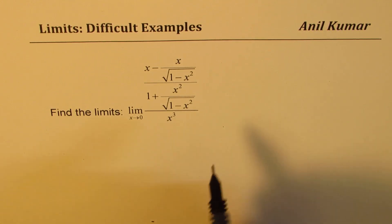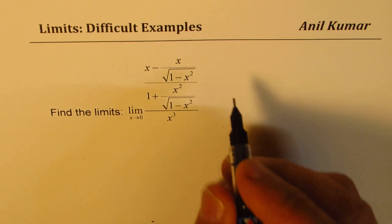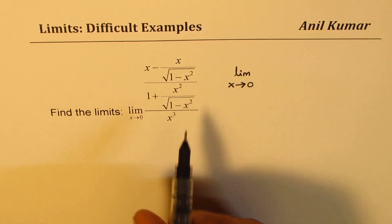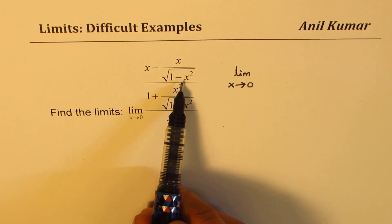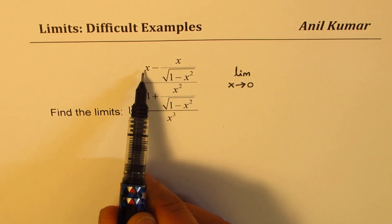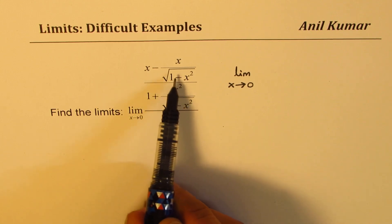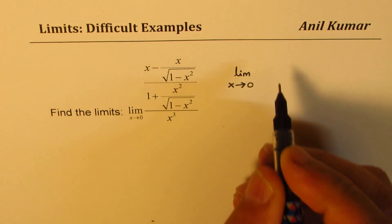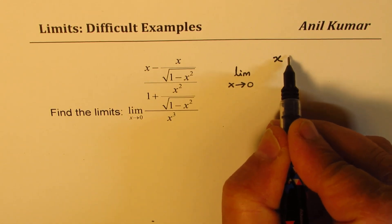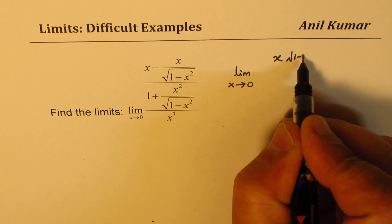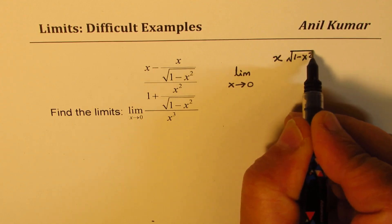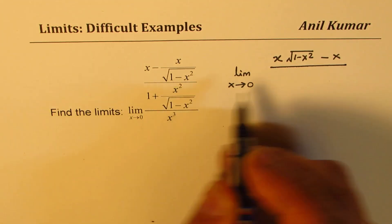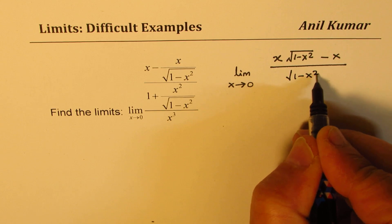Let's rewrite this in a better form. We write this as the limit as x approaches 0. We can take the common denominator, so it gets multiplied with x. In the numerator, we get x times square root of 1 minus x squared, minus x.